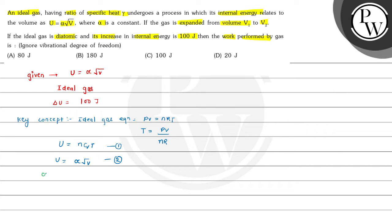We write: alpha times the square root of V equals nCvT. Now substituting the value of temperature T equals PV divided by nR, we get: alpha times the square root of V equals nCv times PV divided by nR. The n cancels out, and we can write alpha times the square root of V equals Cv divided by R times pressure times volume.